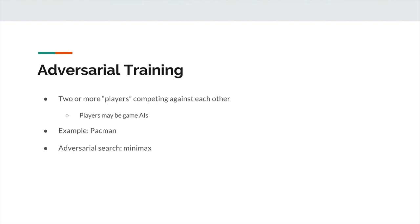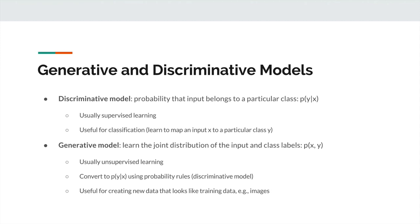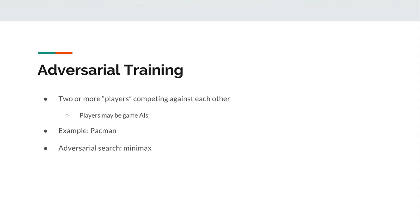In the next video, we'll discuss generative adversarial networks in more depth. To do a quick recap: with discriminative models, you're building a probability distribution over all the classes given a particular input — it's really just a classification task. With a generative model, you want a probability distribution over both the output and the input, usually done with a joint model of probability of X and Y. You can convert a generative model to a discriminative model using the chain rule of probability. For adversarial training — the second part of GANs — you have two components competing against each other, and we'll discuss all this in the context of GANs in the next video.